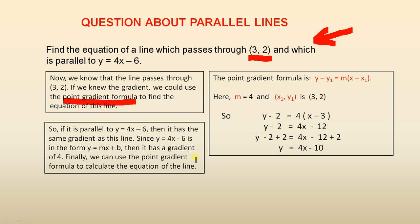Finally, we can use the point gradient formula to calculate the equation of the line. Now, here is the very important point gradient formula. m is 4. So that's information for us. x1, y1 is (3, 2).